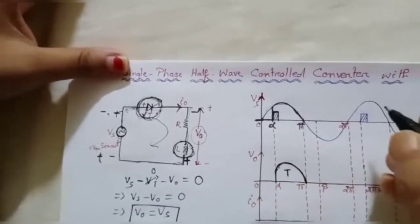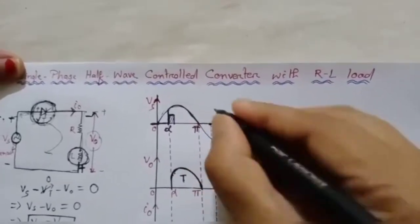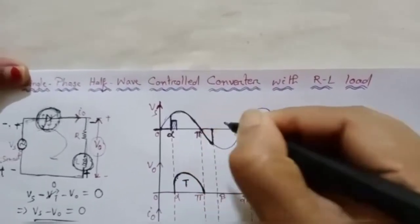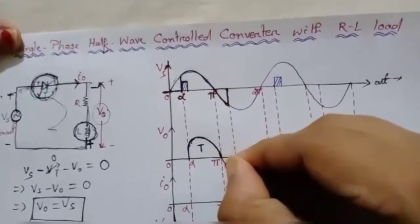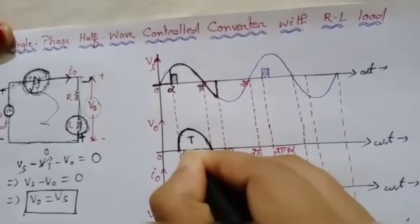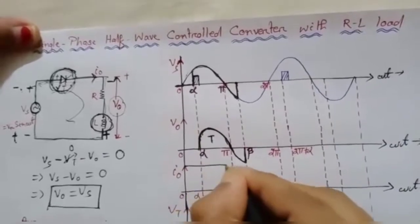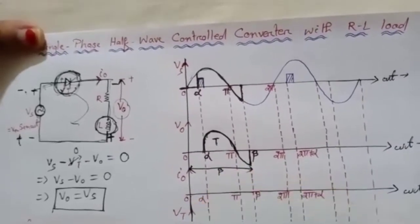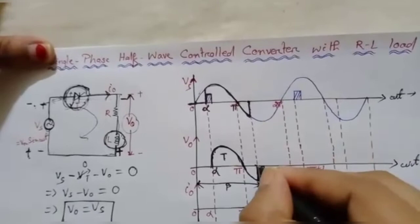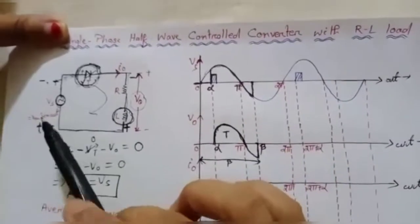Up to some time the inductor releases all its energy, and during that time a negative voltage appears across the load output. This negative voltage region extends from π into the negative half cycle. The angle up to which this extends is called beta — the extinction angle. Beta is measured from 0 to the point where the inductor finishes releasing energy. So the output voltage exists from alpha to beta.